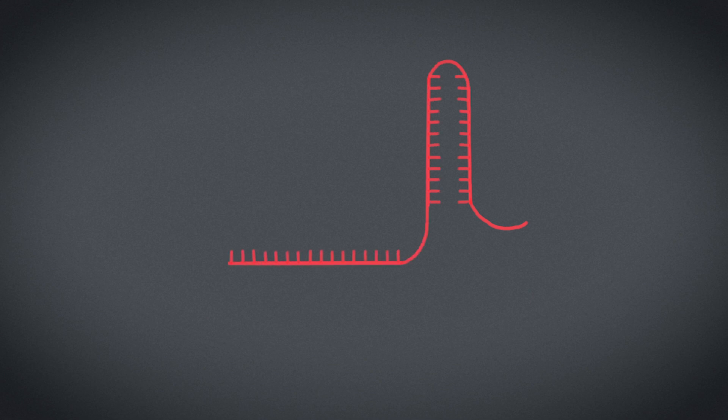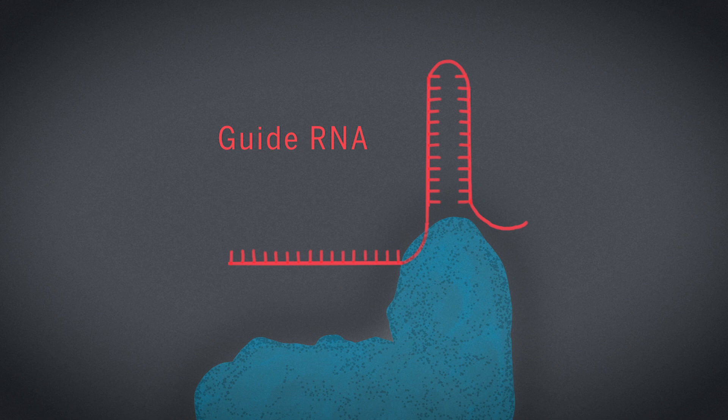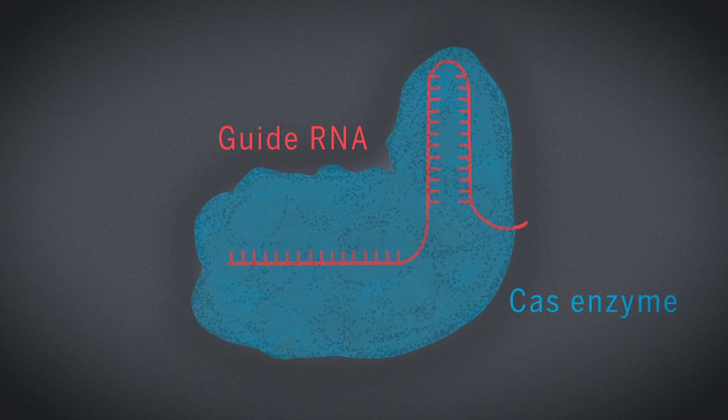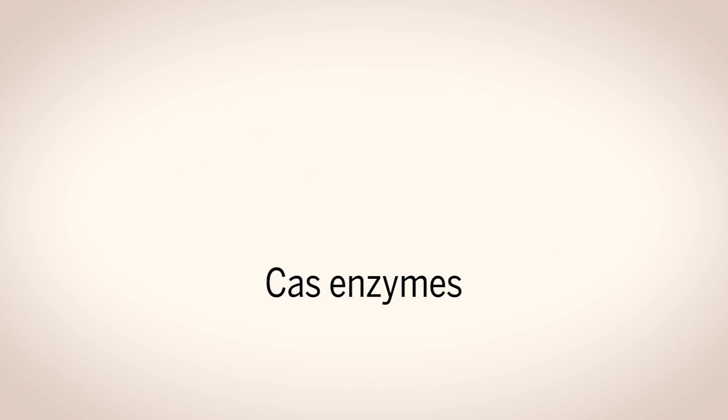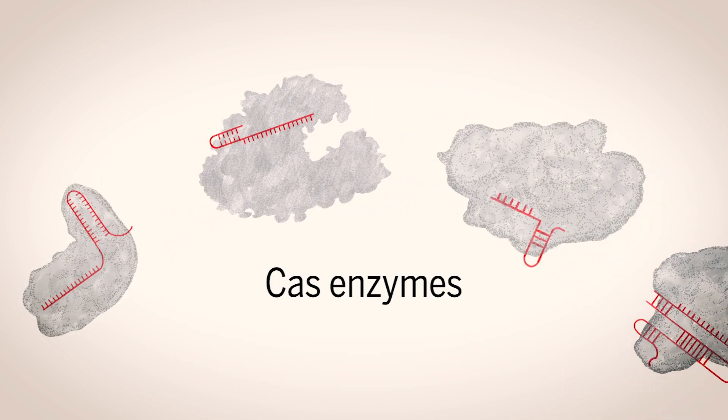CRISPR complex finds a targeted part of a genome with a guide RNA. The guide tows along an enzyme from what's known as the Cas family that does the actual cutting. But Cas enzymes come in many varieties.